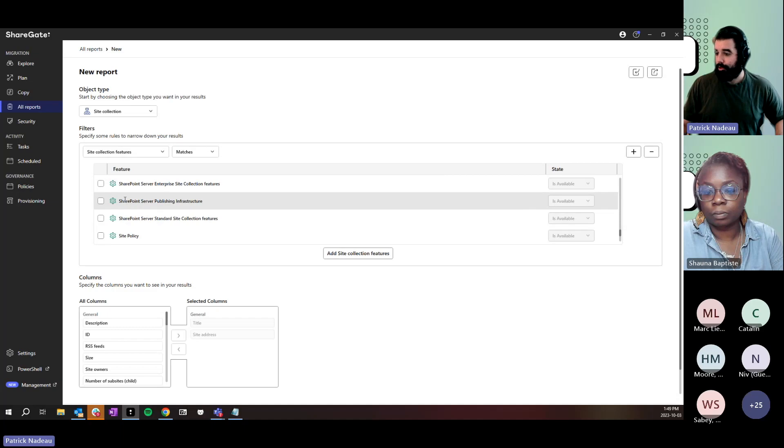So I can choose SharePoint server publishing infrastructure. And then I can choose I want to find sites that have it activated. Once I run my report, it'll show me all the site collections.